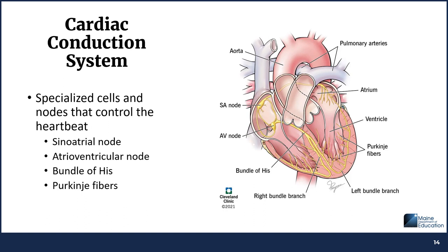Now let's move on to the cardiac conduction system. The cardiac heart muscle is made up of specialized cells and nodes that control the heartbeat. The first is the sinoatrial node, also known as the natural pacemaker of the heart. The SA node is located in the right atrium and sends an electrical impulse across both atria, resulting in atrial contraction, also called atrial systole, moving blood from the atria into the ventricles. The autonomic nervous system controls how fast or slowly the SA node sends signals. The impulses then converge at the atrioventricular node, which delays them so the atria have enough time to fully eject blood into the ventricles.